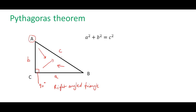What we are saying is that the square of the hypotenuse is equal to the sum of the squares of the other two sides. You need to remember this formula and you need to be able to apply it.